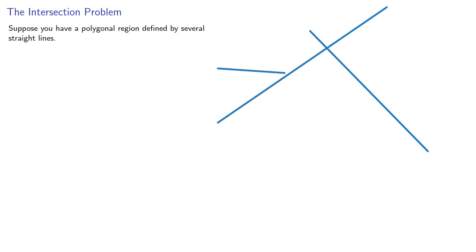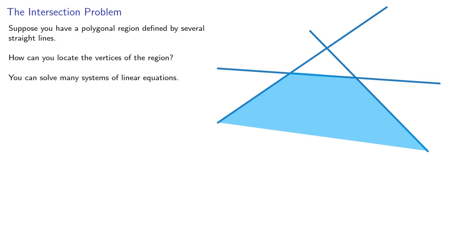Suppose you have a polygonal region defined by several straight lines. How do you locate the vertices of the region? You can solve many systems of linear equations.